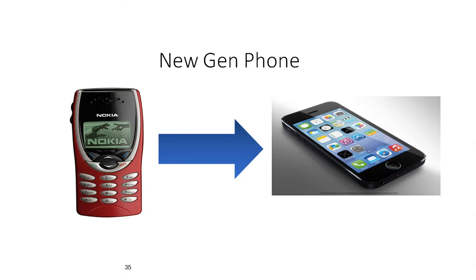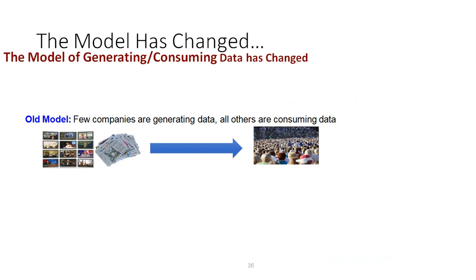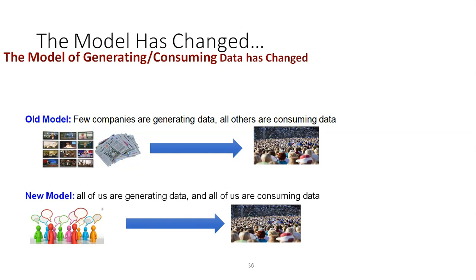Mobile technology has been innovated — new Android devices integrate all devices and information. In the older world, only a few selected print and media channels generated information; today everybody generates information. This is a 360-degree change — all are consuming data and all are generating data. This shift has created the concept of big data.